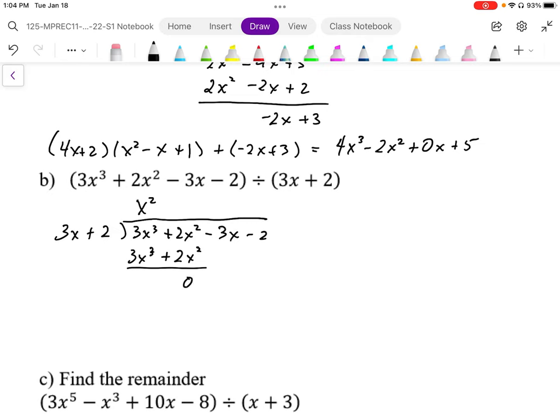When we subtract this we get 0. We can bring down -3x - 2 and then we get a remainder of 0. A remainder of 0 means it divides evenly, so these are factors. Factors give us remainders of 0.